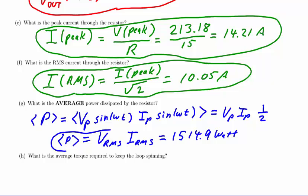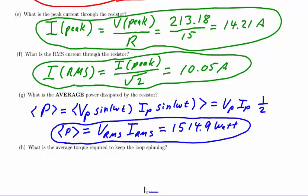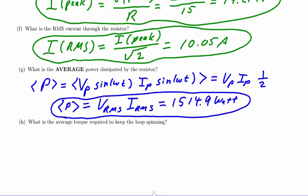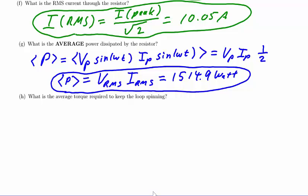Finally to complete the problem a rather bizarre question is presented to us. And that question is what is the average torque required to keep the loop spinning? This part of the problem is simply a reminder of something that is quite true. Energy is never for free. The fact that you are dissipating power in the resistor means that you must have input energy into the system somewhere and that input is the torque required to spin this loop which is not negligible at all.